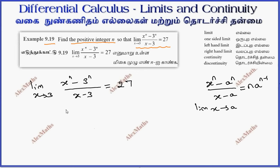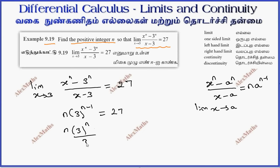If we apply the formula, this gives n·aⁿ⁻¹ = 27. With a = 3, we get n·3ⁿ⁻¹ = 27. We can combine the power: 3ⁿ⁻¹ means the exponent is n-1.